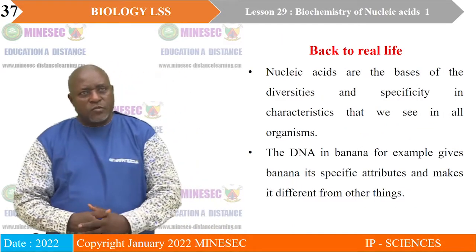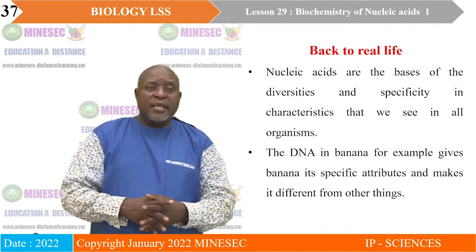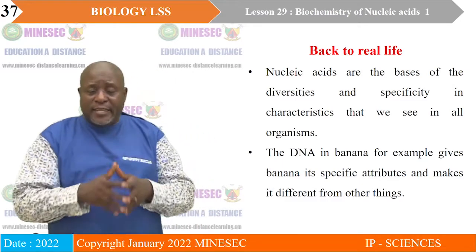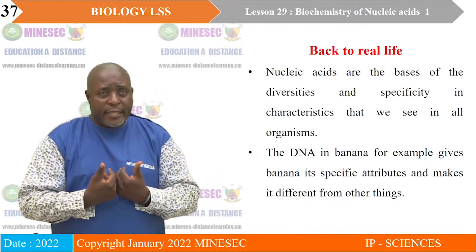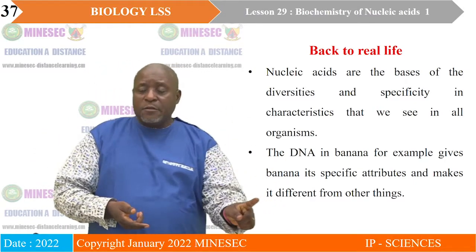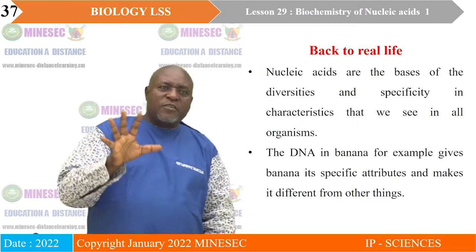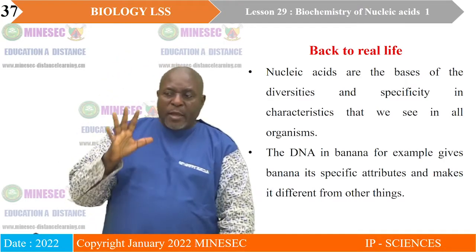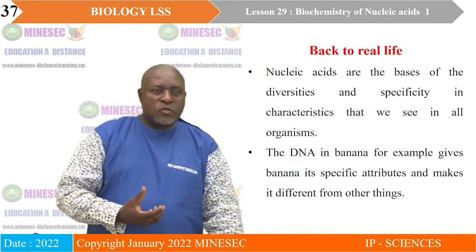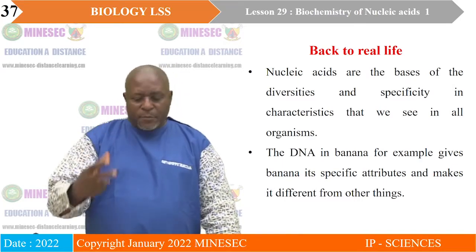If we come back to our real life situation — which was talking about the fact that nucleic acids are the basis of the diversity and specificities of characteristics we see in organisms — then we see that it is true. We have extracted banana DNA. So banana has DNA, purple has its own DNA, you have your own DNA, a mango tree has its own DNA. That is why a mango tree cannot produce banana, and a banana plant cannot produce purple, because the specific DNA in each organism leads to the specific production of its attributes.